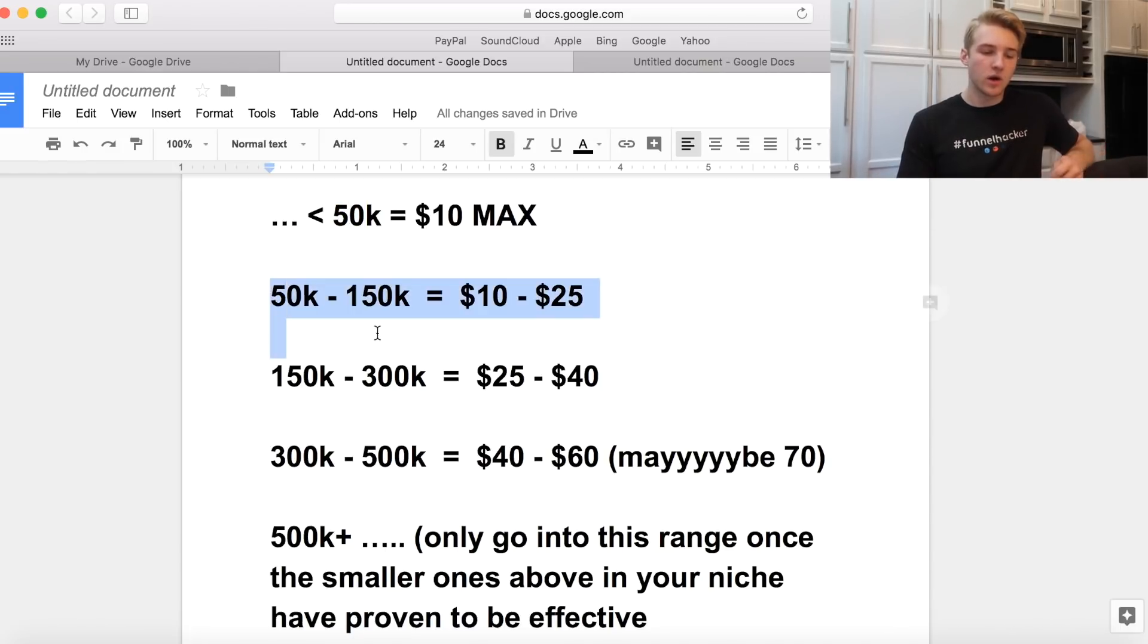Stepping up a level, 50,000 to 150,000, I usually end up paying 10 to 20 bucks, 25 on the rare side. The only instance I mean by rare side is when it has super good engagement or maybe it's in a crazy niche that usually costs more. 10 to 20 seems to be the range for that.